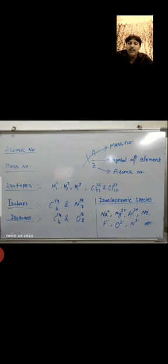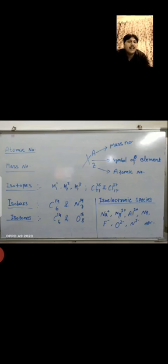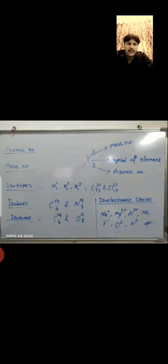To summarize: in isotopes, the atomic number is the same; in isobars, the mass number is the same; and in isotones, the number of neutrons is the same. Our next topic is isoelectronic species. 'Iso' means same — so isoelectronic species means atoms, group of atoms, or ions in which the number of electrons are equal. For example: Na⁺, Mg²⁺, Al³⁺, Neon, F⁻, O²⁻, N³⁻ — all have 10 electrons.